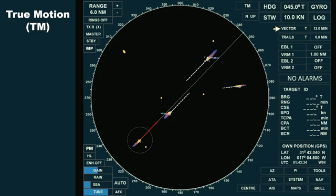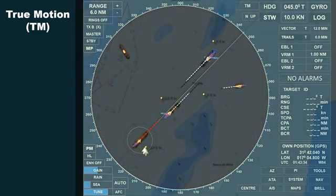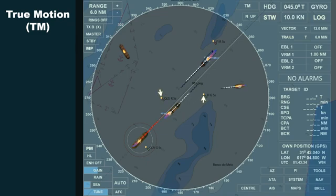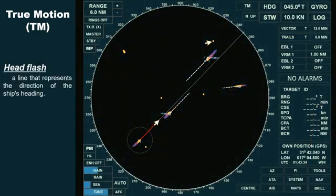On our radar screen, this is our ship, shown offset from the center. The small radar echo visible on her starboard beam is a buoy, along with three other small echoes that can be seen on both sides of the head flash. This is a head flash — a line that represents the direction of the ship's heading.